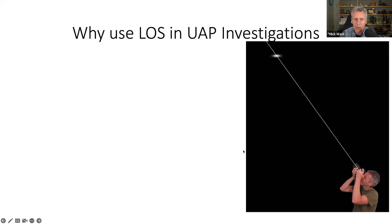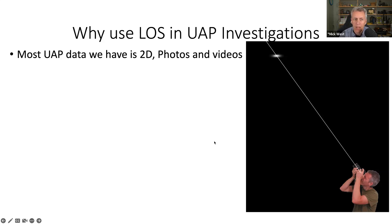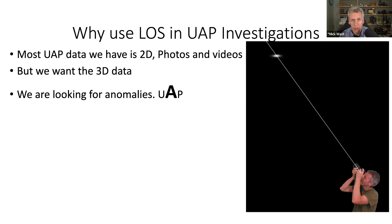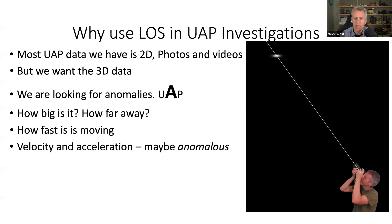Why do we use lines of sight in UAP investigations? Most UAP data we have is two-dimensional — photos or videos — but what we really want is three-dimensional data. We're looking for anomalies, unidentified anomalous phenomena, the black swan that is different from the norm. To find anomalies, we need to figure out things in three dimensions: how big the UAP is, how far away it is, how fast it's moving. Velocity and acceleration are the things that will actually show whether something is anomalous.